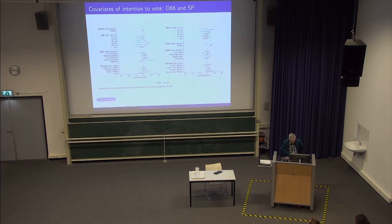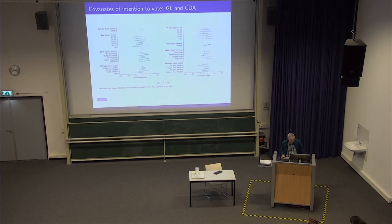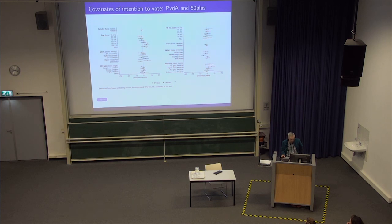On education: people with university education have a large tendency to vote for D66. There's one more party very popular among people with university education, which is GroenLinks — the green left — they're also quite popular among people with the highest education level. And for the oldest age group, 75-plus have a huge tendency to vote for the Christian Democrats, and the other party popular among 65-plus is, as you might guess, the party called 50 Plus.